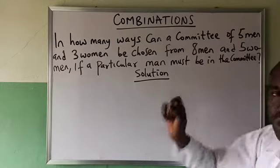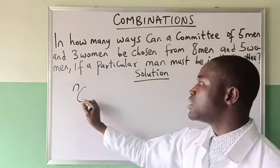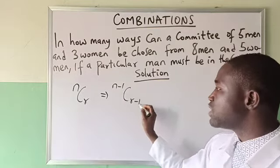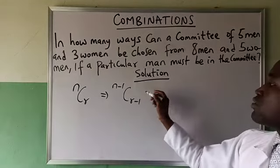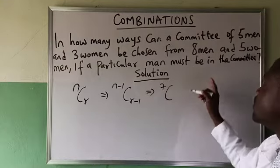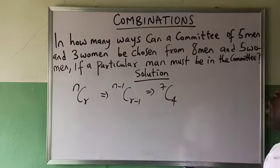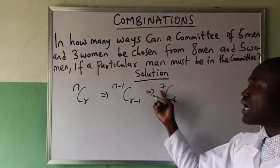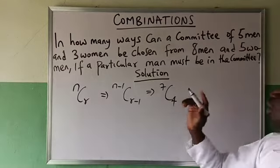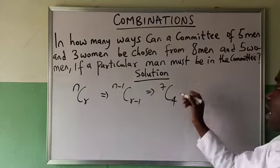There is a restriction: a particular man must be in that committee. Since a particular man must be there, in combination we have n combination r. We will remove that particular man. Total men is eight; eight minus one gives seven. We are selecting five; five minus one gives four. So we select four men out of seven, because that one particular man is already fixed, and one plus four makes five.